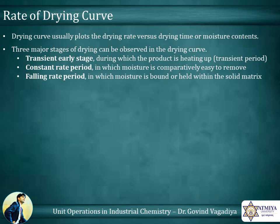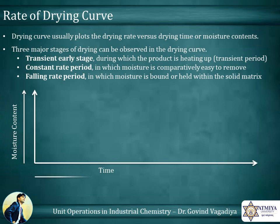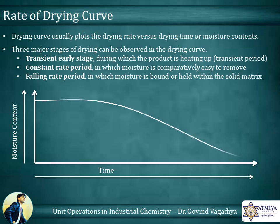The second stage is the constant rate period, in which moisture is comparatively easy to remove. The final stage is the falling rate period, in which moisture is bound or held within the solid matrix. From the drying curve of an assumed wet product, as time passes, the amount of moisture decreases to its minimum level.